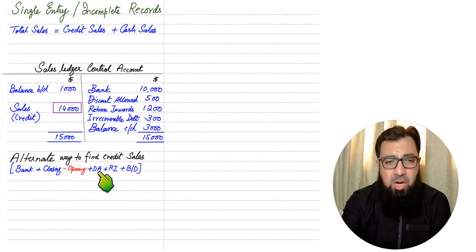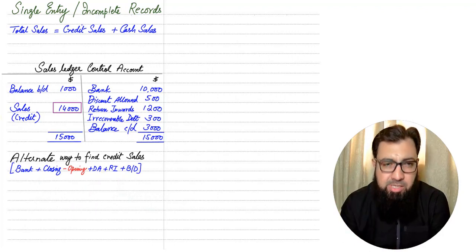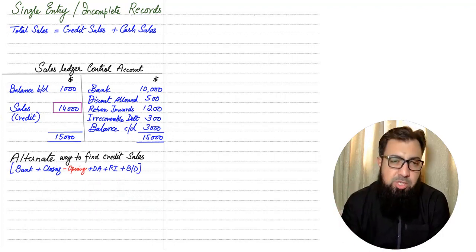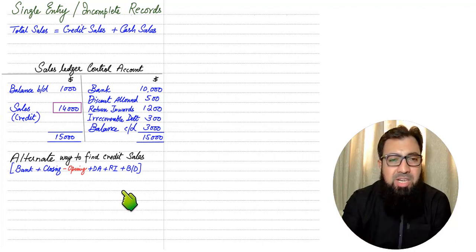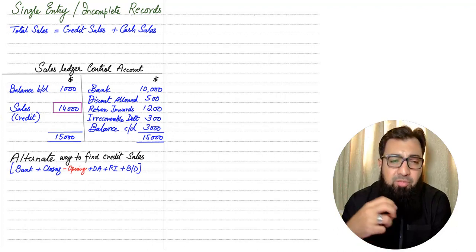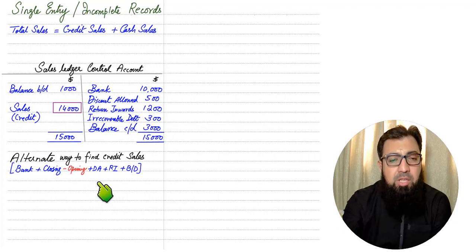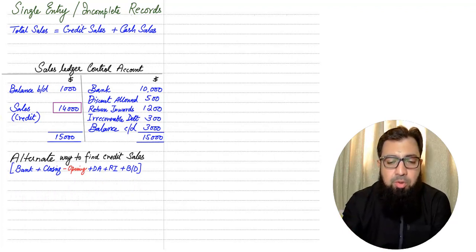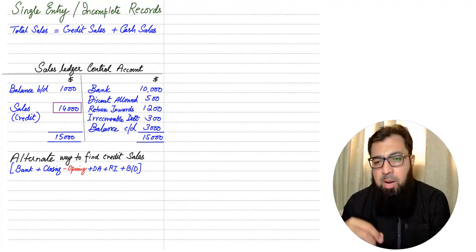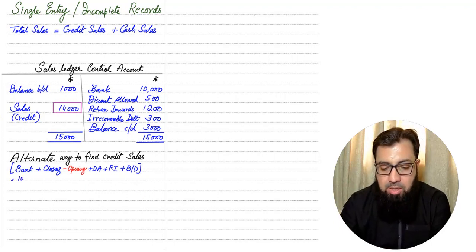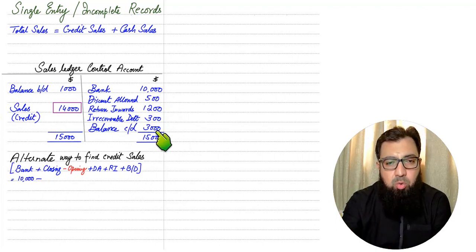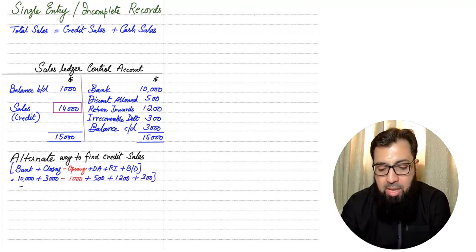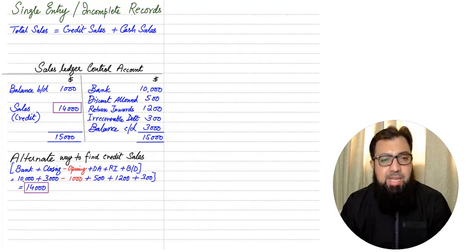Whenever we allow discount to customers we only allow discount allowed to credit customers — cash discount is offered to credit customers because they are paying us earlier than promised. So if there is a credit sale, only then can we give discount to credit customers; therefore discount is added to credit sales. Return inward arises when we sell goods on credit. Bad debt refers to a situation where we have given credit to customers and they are unable to pay. So the bank figure is 10,000, closing trade receivables is 3,000, opening balance is 1,000, and adding discount, return inward, and bad debt gives us credit sales of 14,000.